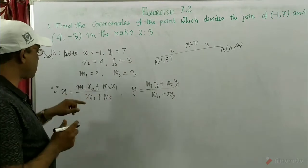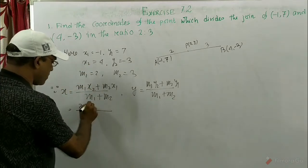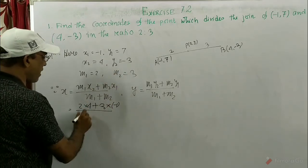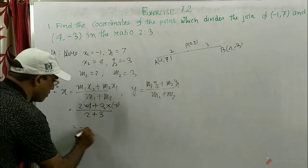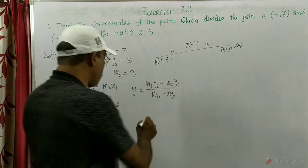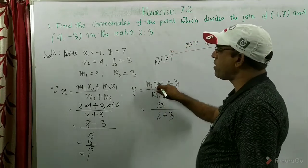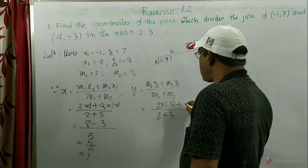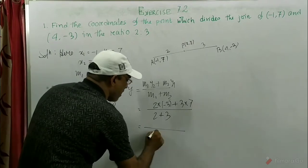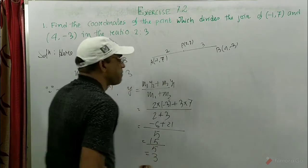Now we are putting in the values. m1 is 2, x2 means 4, plus m2 means 3 and x1 means -1, divided by m1 + m2 = 2 + 3 = 5. This gives us 8 - 3 = 5, so 5 by 5 equals 1. And for y: m1 + m2 is 5, m1·y2 = 2 × (-3) = -6, plus m2·y1 = 3 × 7 = 21. So this will be -6 + 21 = 15, divided by 5 equals 3.